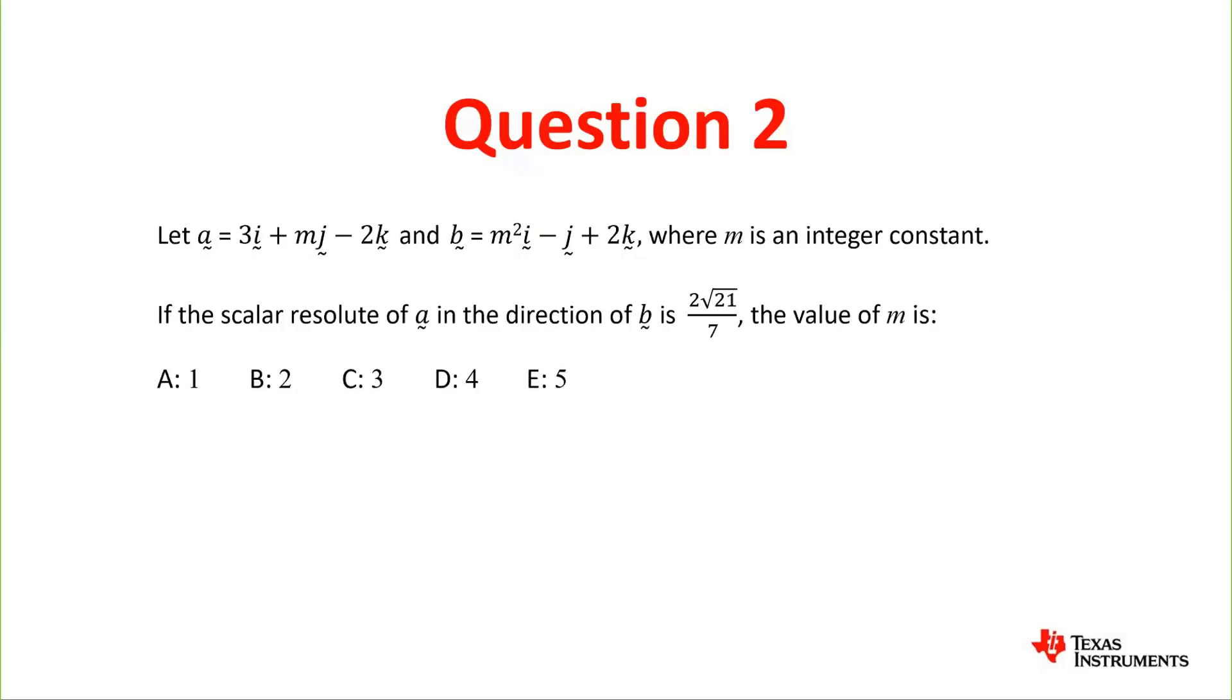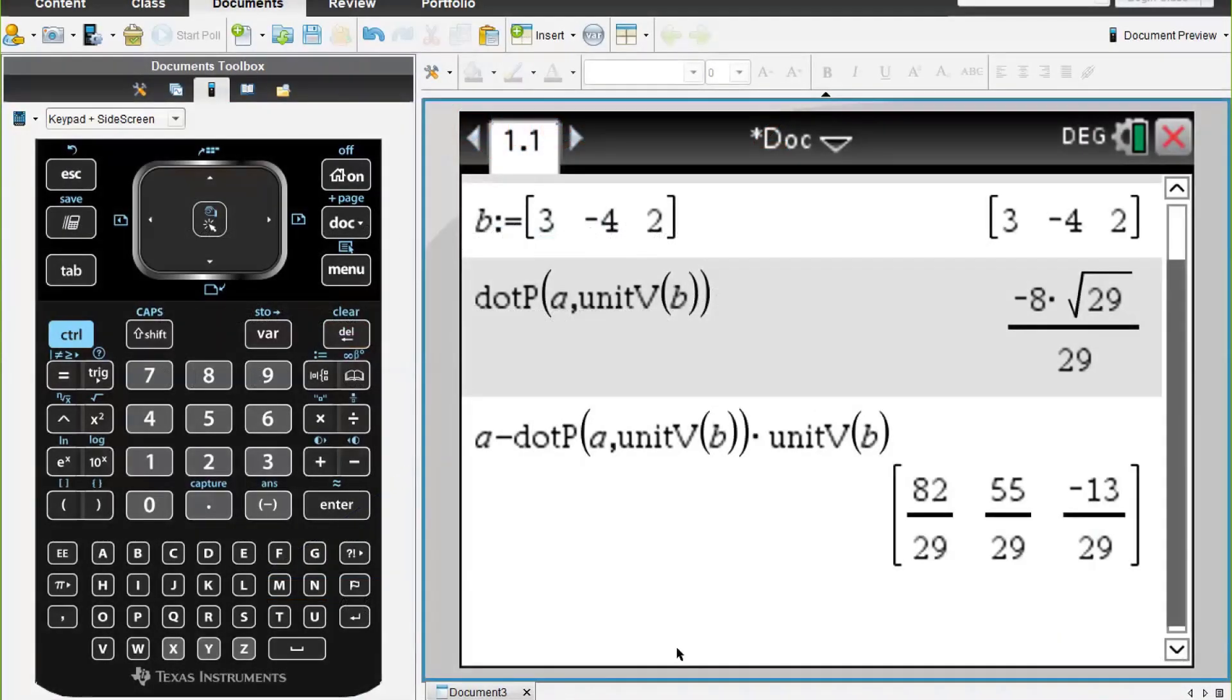We've got a multiple choice and we need to try to work that out. So again we have our diagram for the scalar resolute. We'll go to the calculator. We've got to work out a dot unit vector b, we have to let that equal to root 21 on 7 and then solve for m. So this time I'm going to put in a new problem, so doc, insert new problem and a calculator.